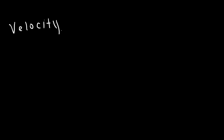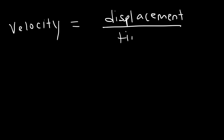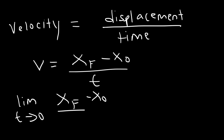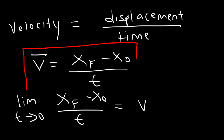Velocity tells you how fast an object's position is changing with respect to time. Basically, velocity is the displacement — the change in position — over time. So V equals the final position minus the initial position, divided by the elapsed time. This expression represents the average velocity. Simply use this equation: it's the change in position over time, or displacement over time.